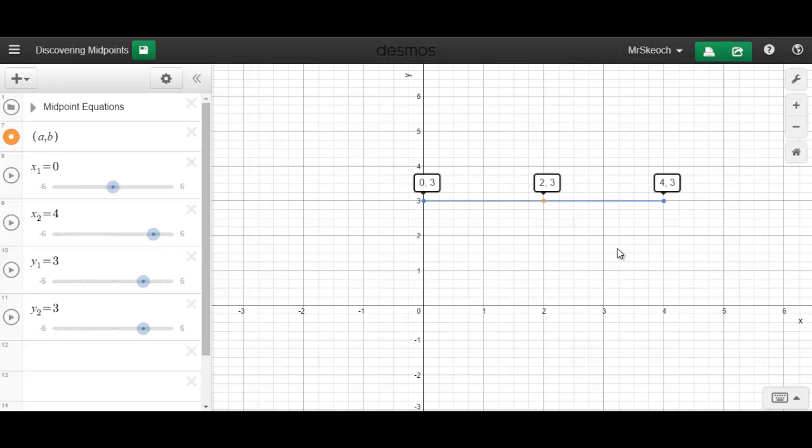So mathematically what did we do to come up with this point (2,3)? Let's first look at the x values. Our first point has an x value of 0. Our second endpoint has an x value of 4. How do you think we came up mathematically with our midpoint having an x value of 2? Well there's two ways to think about it. One is 2 happens to be the halfway point between 0 and 4.